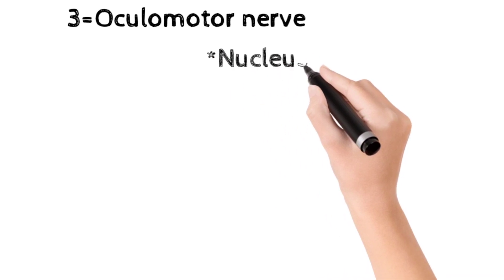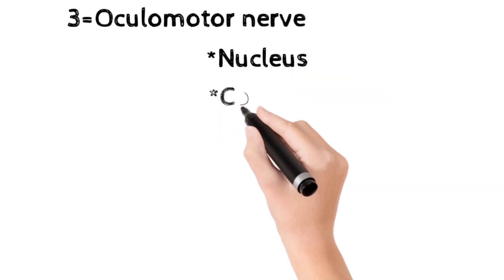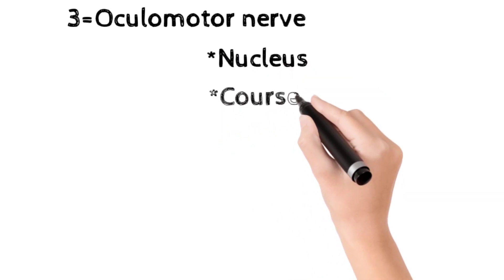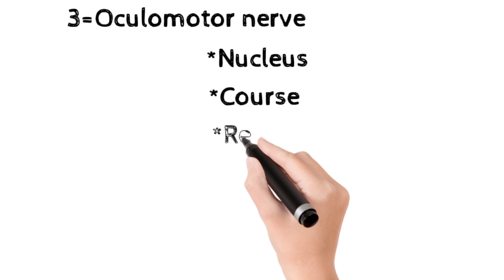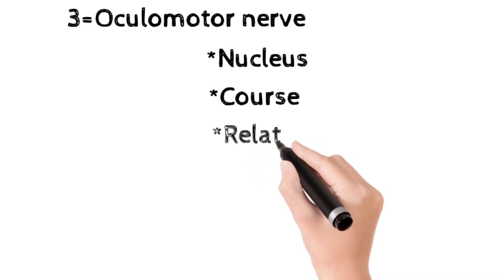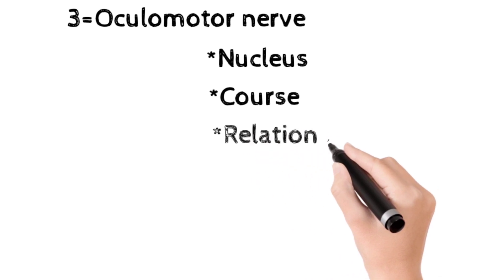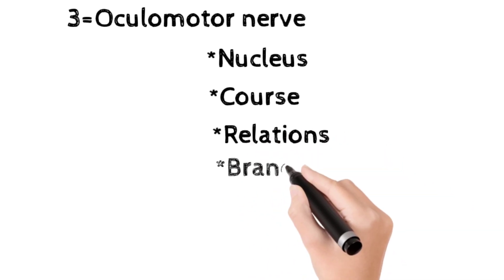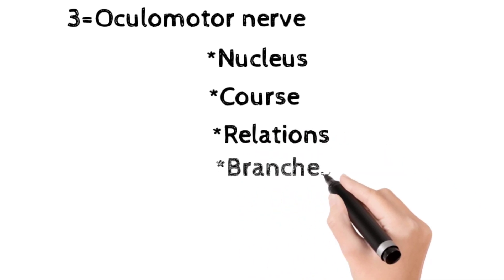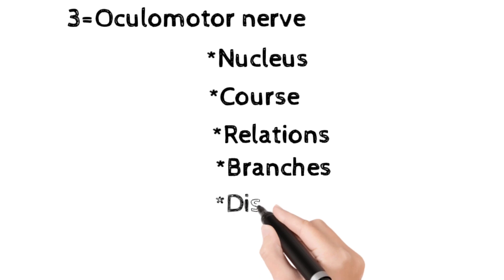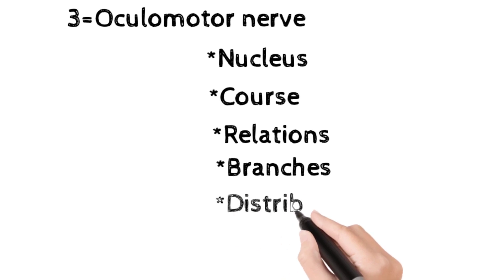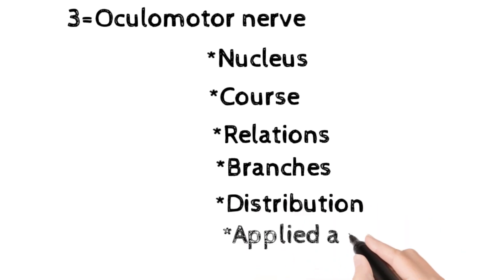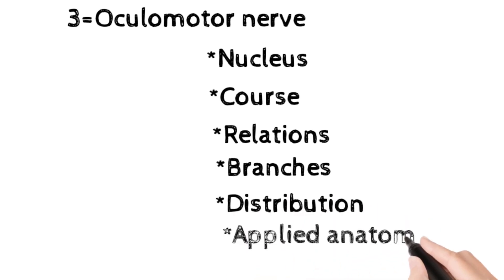The third important topic is the oculomotor nerve. The subheadings are: nuclei of oculomotor nerve, course, relations, branches, distributions, and applied anatomy.